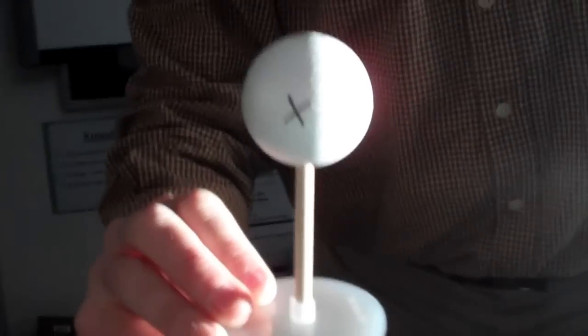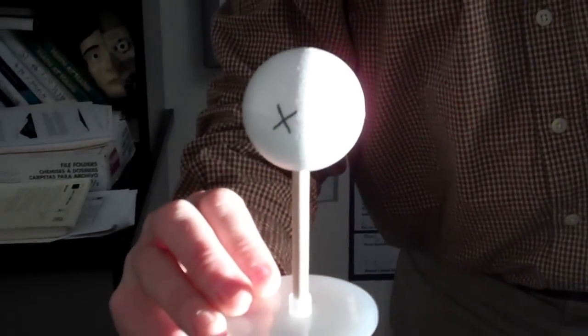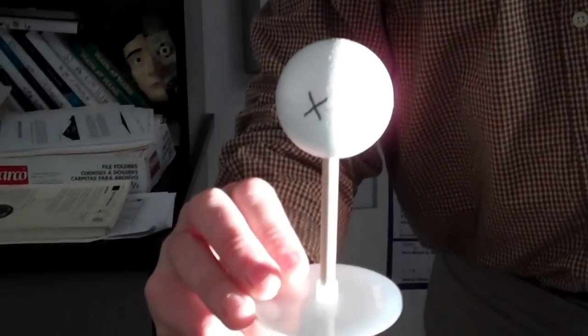If we go a little further, let the moon orbit a little bit more, right there. It's half and half. We call it the first quarter.